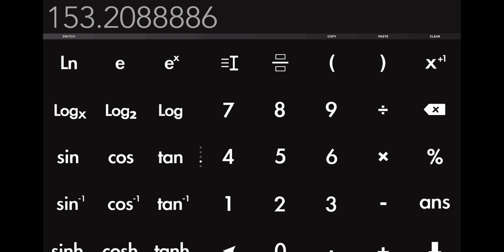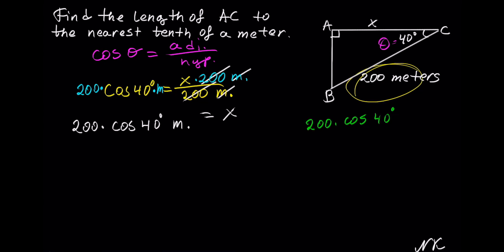And this is equal to 153.20, and we have repeating 8. So on the calculator, we got 153.20 and repeating 8.